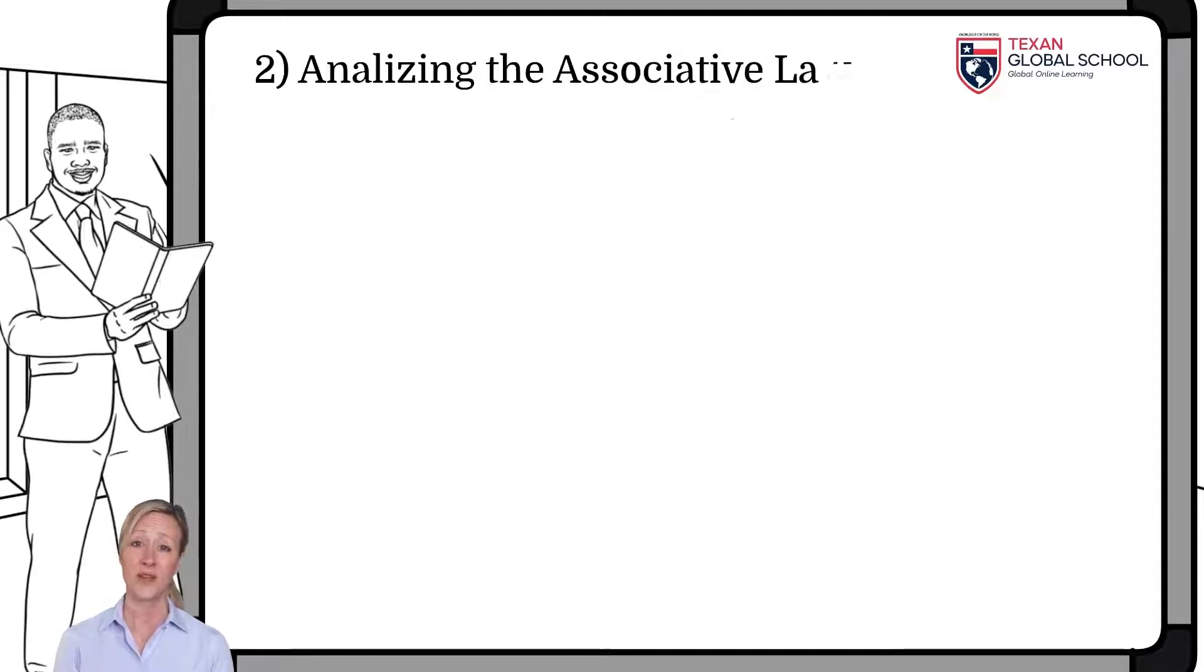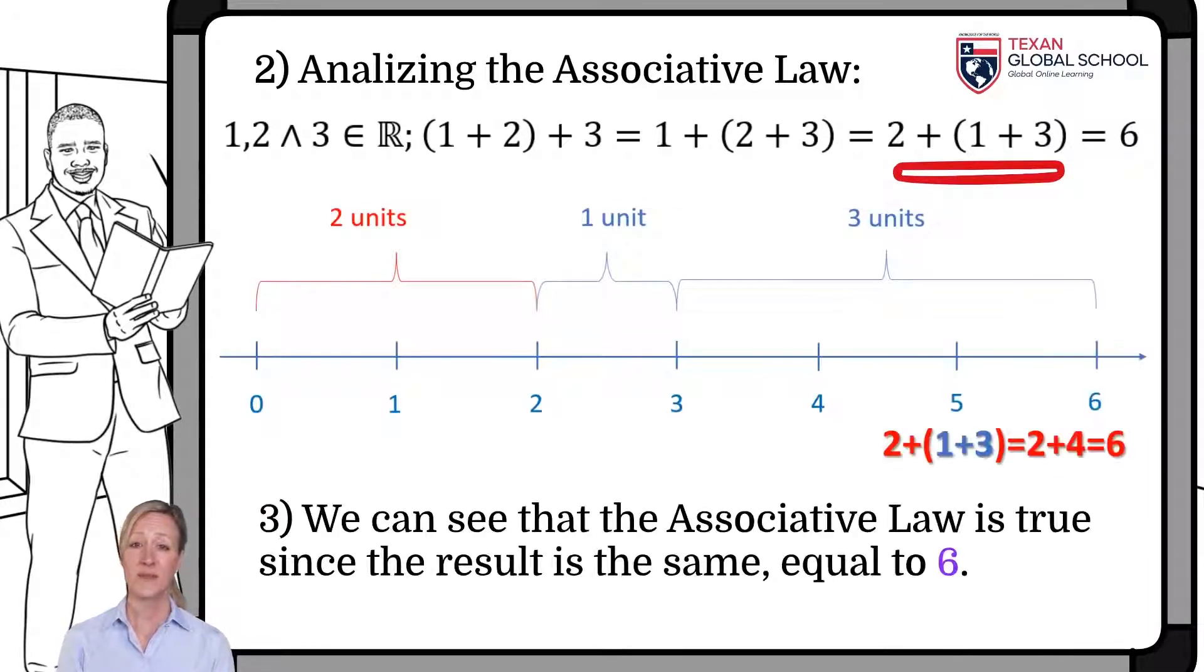Finally, we group 1 plus 3, and to the result, we add 2, obtaining the same result of 6 units. As we can see, we can group and add the numbers as we see fit without altering signs. In the end, the result will be the same.